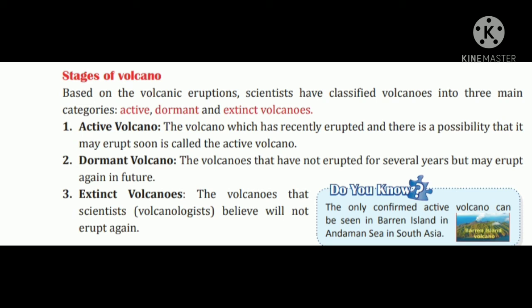Volcanic eruption ke base par, scientists ne teen main categories mein divide kiya gaya hai volcano ko: active, dormant aur extinct volcano. Active volcano jo jaldi jaldi erupt hote rehte hain, unhe active volcano kaha jaata hai. Dormant volcano bahut salon mein bhi erupt nahi hote hain. Extinct volcano, jo ab erupt nahi hote. South Asia ke Andaman Sea mein Barren Island ek active volcano ke roop mein dekha ja sakta hai.